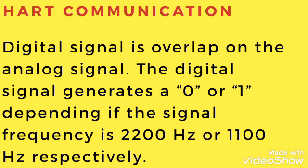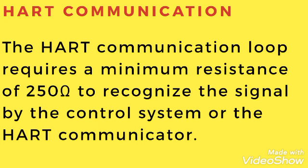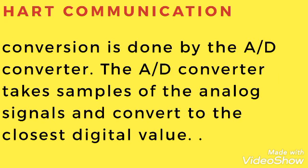HART combines the advantages of the 4-20mA signal but also provides a digital signal with the status of the device. The digital signal is overlapped on the analog signal. The digital signal generates a 0 or 1 depending on whether the signal frequency is 2200Hz or 1200Hz. The HART communication loop requires a minimum resistance of 250 ohms to recognize the signal by the control system.